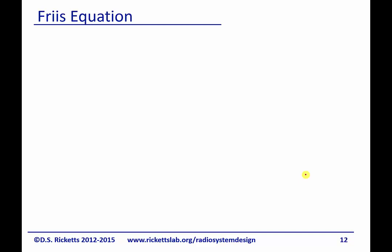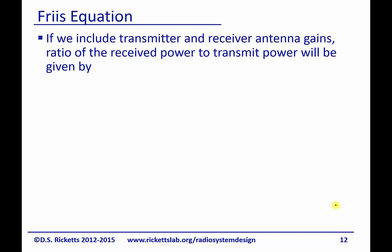Let's now move on to the Friis equation, which ties all this together. If we include transmitter and receiver antenna gains, the ratio of the received power to transmit power can be calculated as follows.